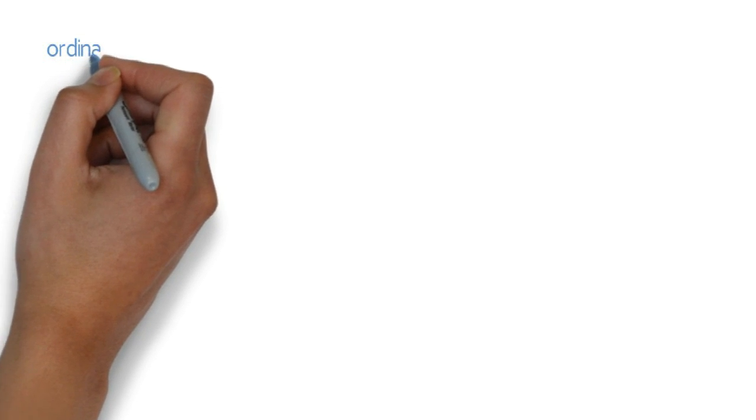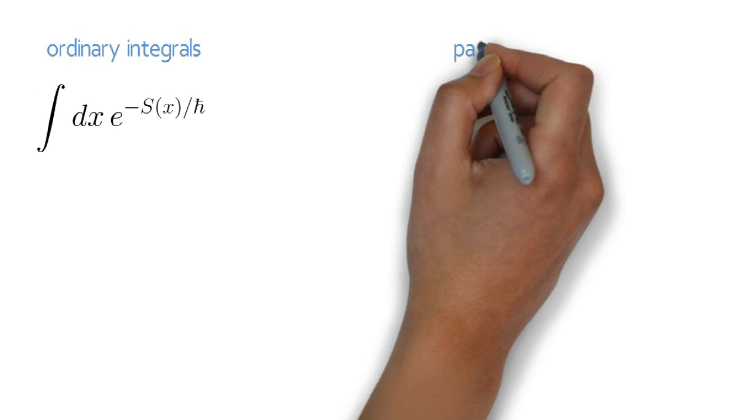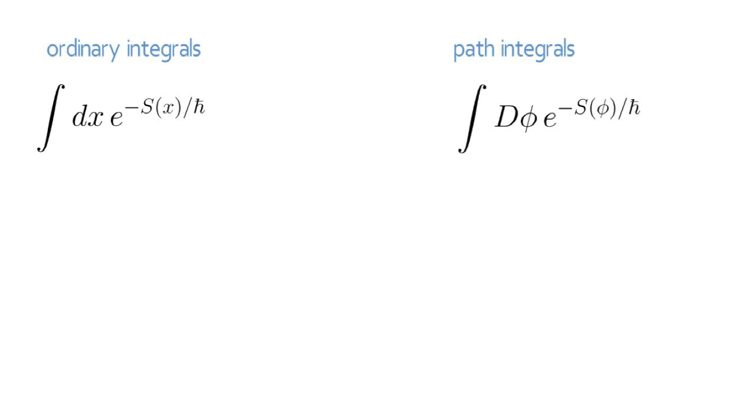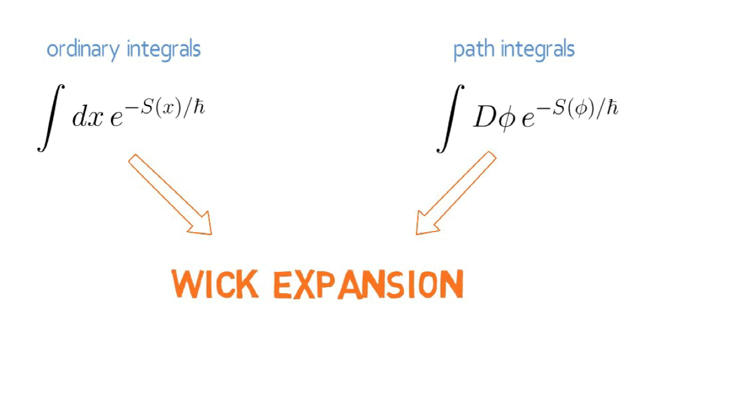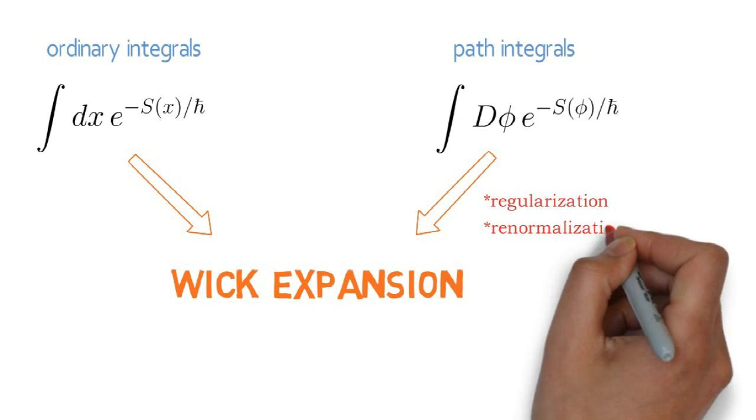The preceding analysis of formal manipulations of ordinary integrals provides the template for how formal manipulations of path integrals are to be understood. A path integral, like an ordinary integral, need not be evaluated as an honest integral. Instead, we can define the path integral using the Wick expansion. The Wick expansion for ordinary integrals and path integrals is conceptually identical, although the infinite dimensional setting of path integrals requires that the Wick expansion be supplemented with the technicalities of regularization and renormalization.